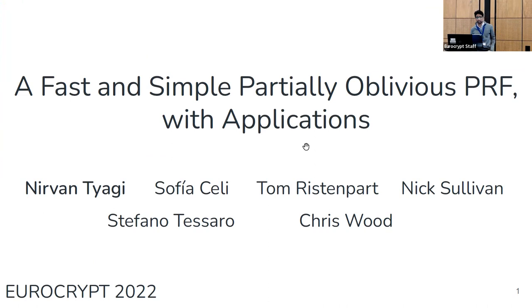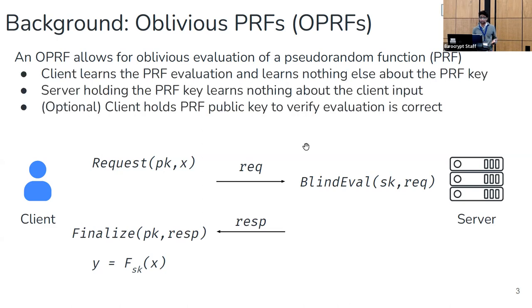First I'll start with some quick background on oblivious pseudorandom functions (OPRFs). At a high level, an OPRF allows a client holding a secret input x to compute a PRF evaluation keyed by a secret held by some other party, say a server. The client should learn only the single evaluation of its input and nothing else about the PRF or PRF key, and the server shouldn't learn anything about the client's secret input. Additionally, we can add verifiability on top of this where the client holds a public key of the server and can verify that the server performs the oblivious evaluation correctly.